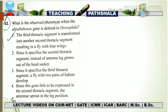Now let's eliminate the rest of the options. The second option states: since it specifies the second thoracic segment, instead of an antenna, a leg grows out of the head socket. First of all, ultrabithorax does not specify the second thoracic segment — it specifies the third thoracic segment. And the explanation given in the second option is the explanation of Antennapedia, not ultrabithorax. So the second option is easily eliminated.